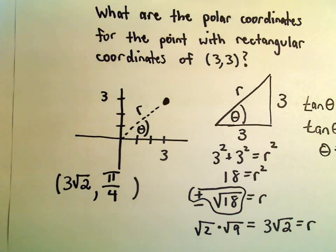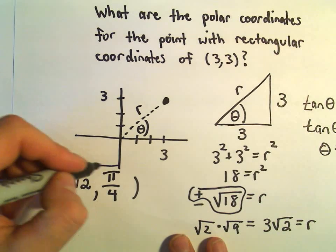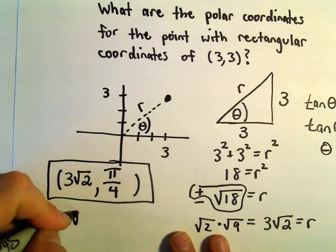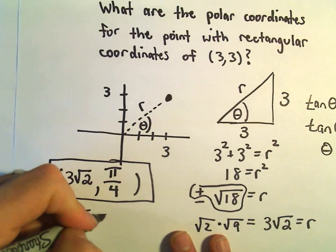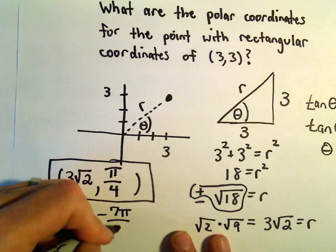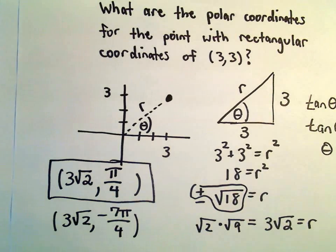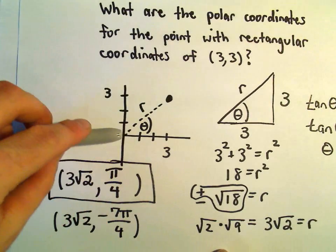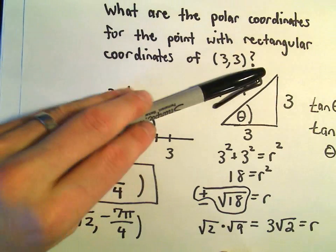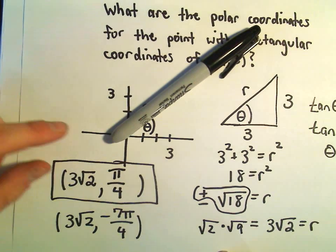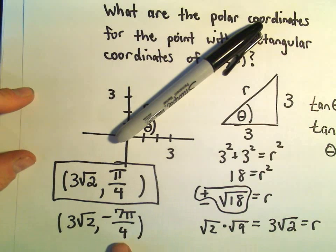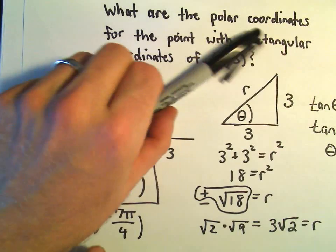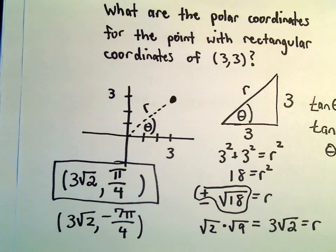Again, notice there's lots of different ways that we could describe this point as well. So notice we could have even used 3 root 2, comma, say, how about negative 7 pi over 4? Because negative 7 pi over 4, we would go around. That would put us at the exact same angle. Negative 7 pi over 4 would put us at the same angle. And again, we would just go at a distance of 3 root 2. So this would also be an equivalent solution.